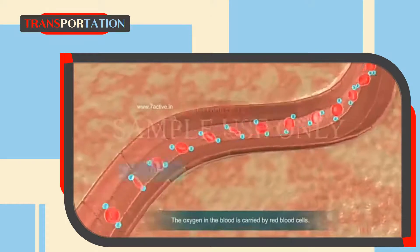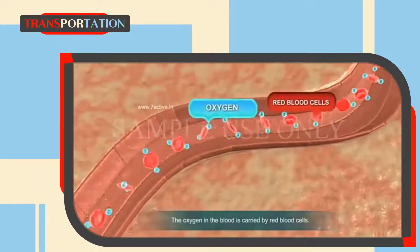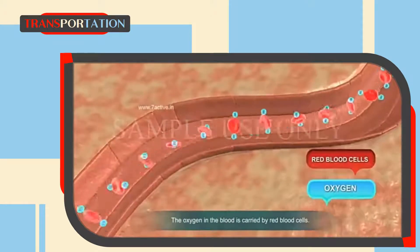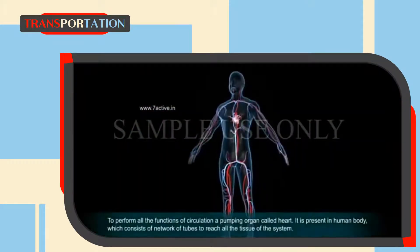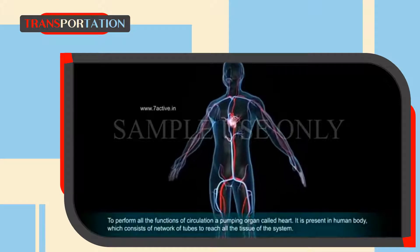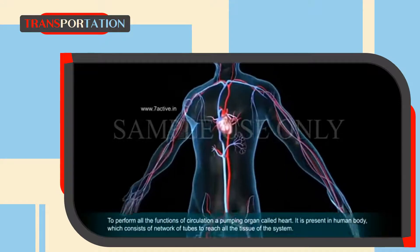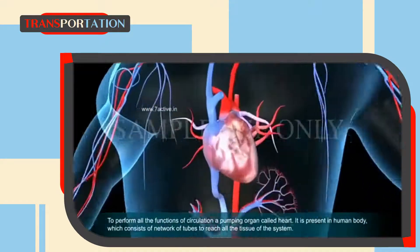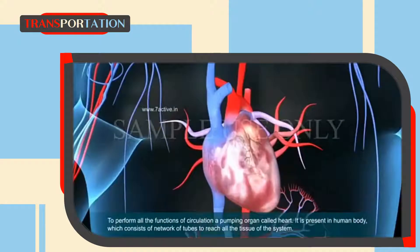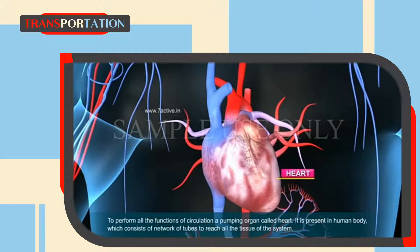The oxygen in the blood is carried by red blood cells. To perform all the functions of circulation, a pumping organ called the heart is present in the human body, which consists of a network of tubes to reach all the tissues of the system.